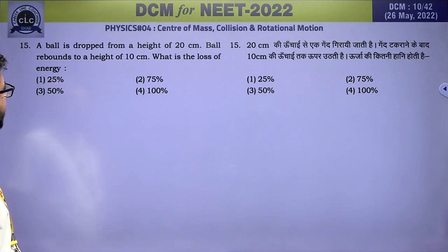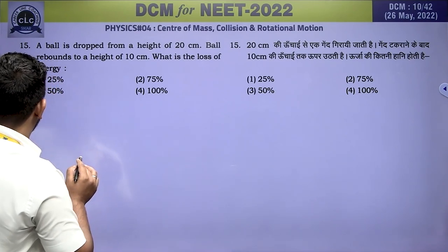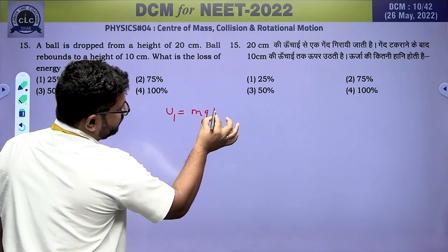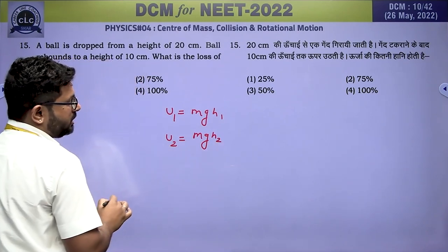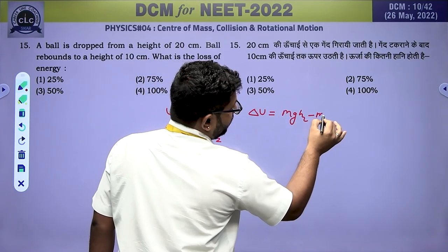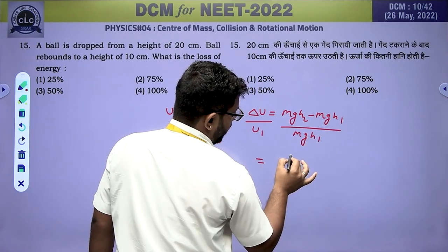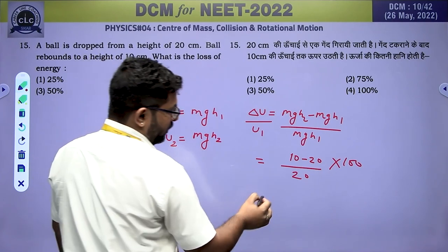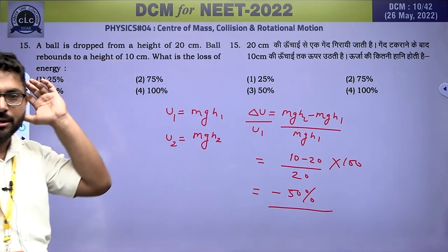A ball is dropped from a height of 20 cm and rebounds to a height of 10 cm. Loss of energy: initial energy = MgH1, final energy = MgH2. Percentage loss = (H2 − H1)/H1 × 100 = (10 − 20)/20 × 100 = −50%. The negative sign indicates a 50% energy loss.